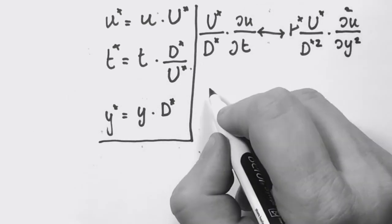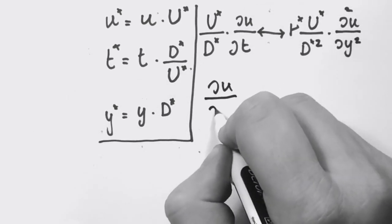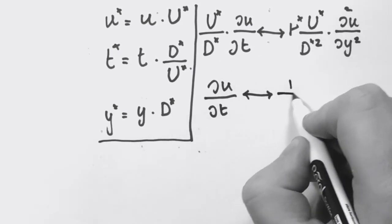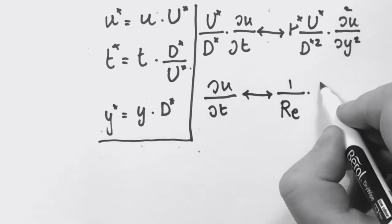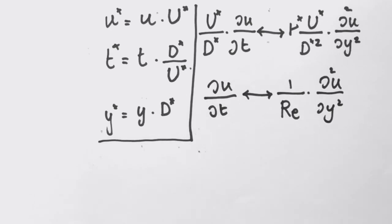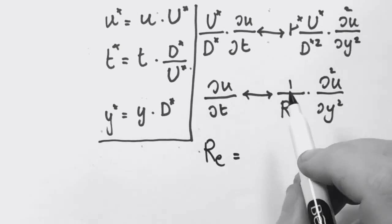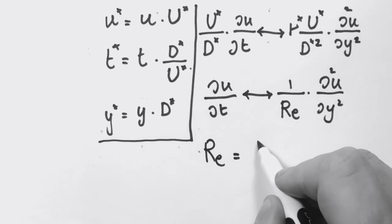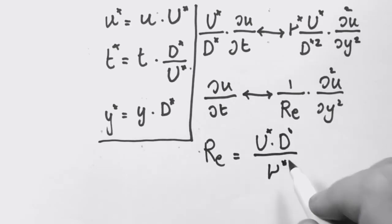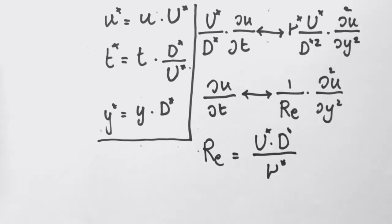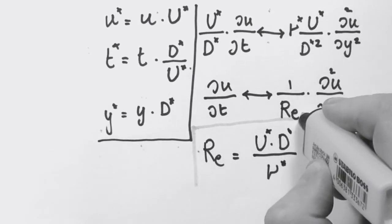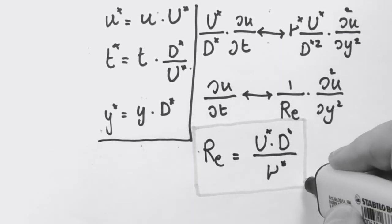If you rearrange you find ∂u/∂t to balance the viscous term that now has this form. We have the Reynolds number that appears. So we define the Reynolds number as U*D* divided by the kinematic viscosity ν. In this way we see how the Reynolds number emerges from the Navier-Stokes equations.